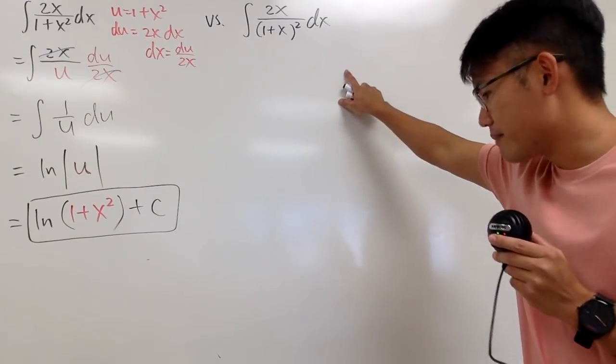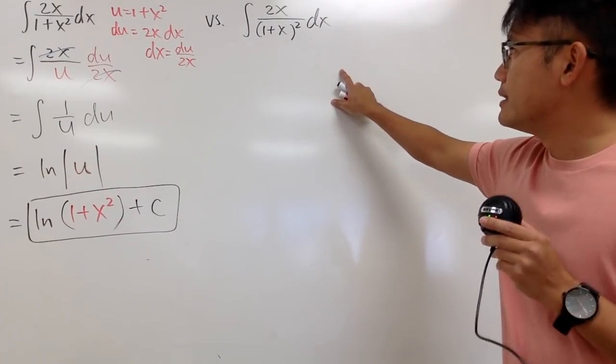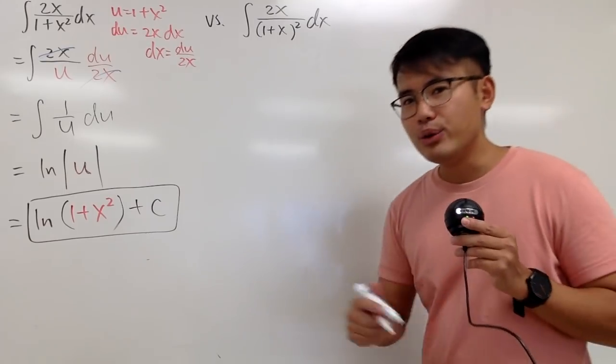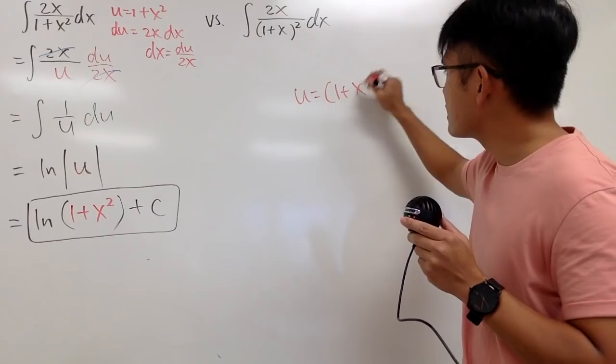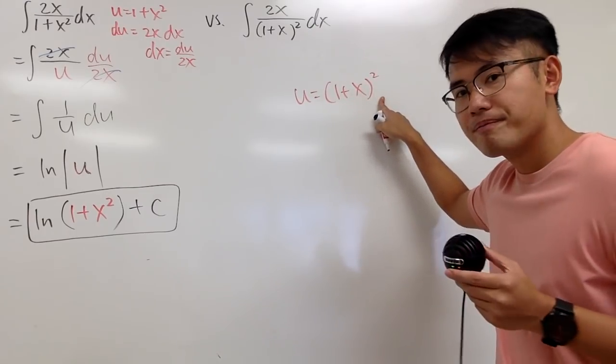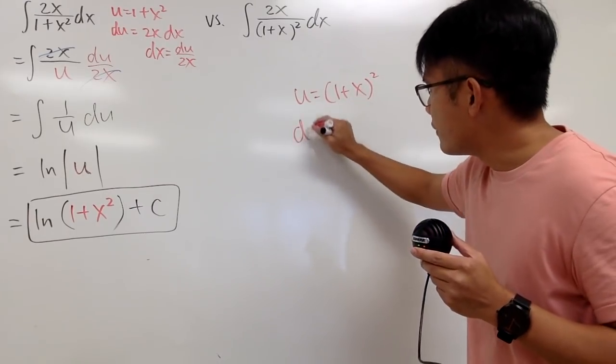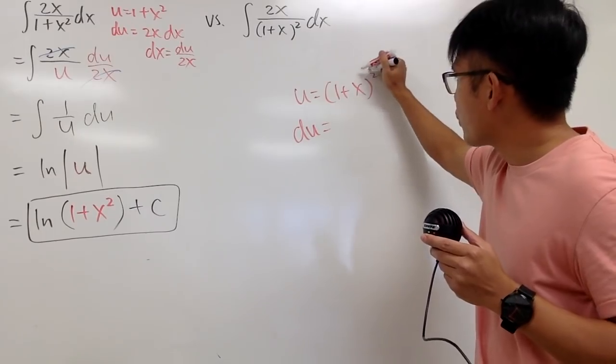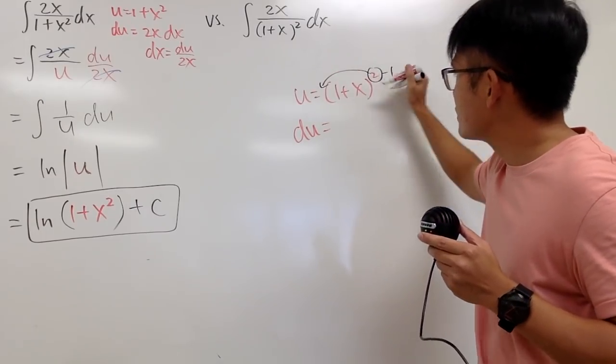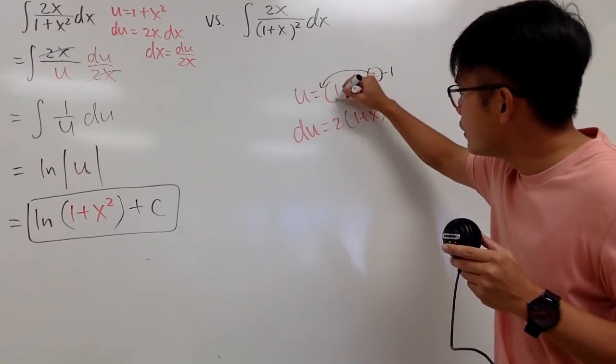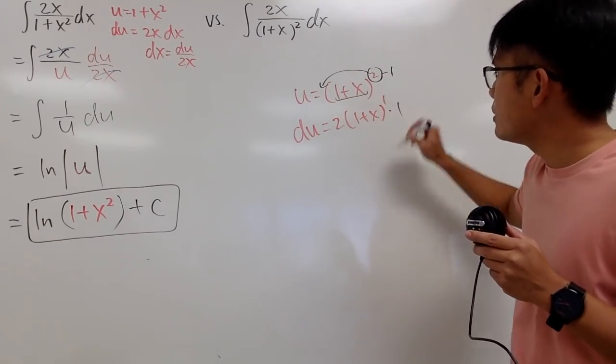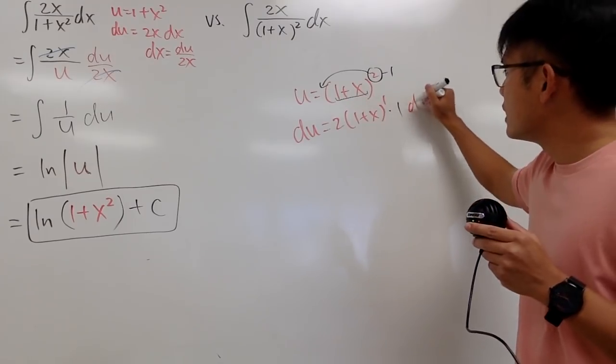Now, let's take a look at this one. Hmm. What if I let u equal to the whole denominator, which is 1 plus x squared, like this now? In this case, if I differentiate, this right here requires the power rule like this. So I get 2, 1 plus x to the first power, and then I differentiate the inside because of the chain rule, and the derivative of this is 1 dx.